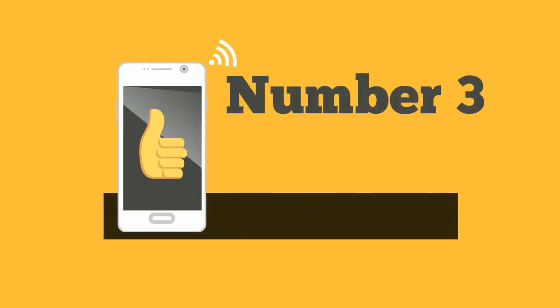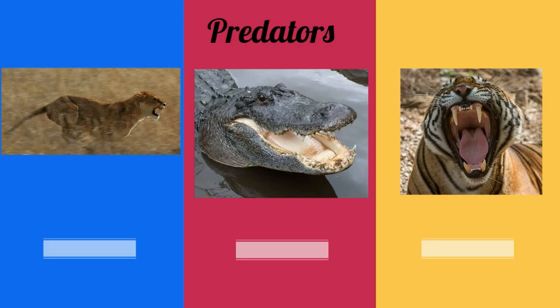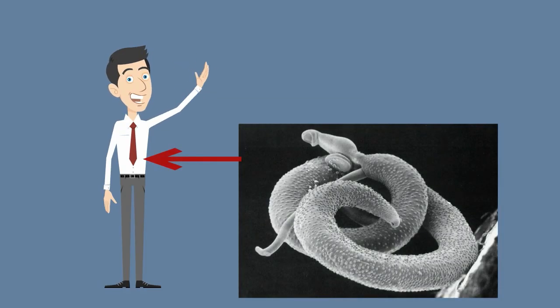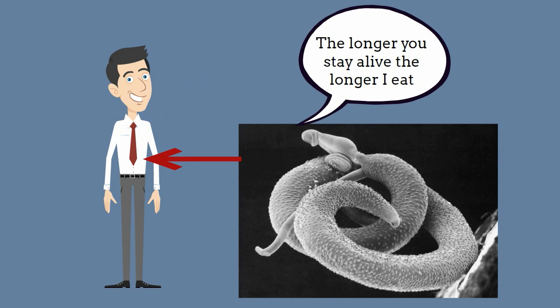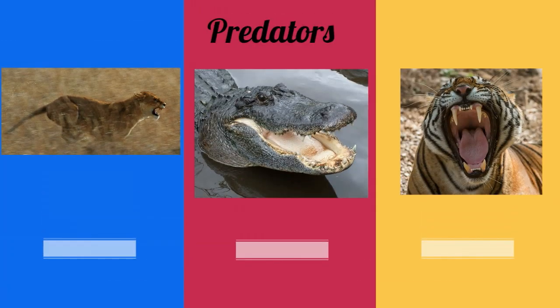Number 3: The predator has a single goal — consume the prey. Most of the time it is advantageous for the host to stay alive for the parasite. As long as the host stays alive, the parasite benefits. Many times the parasite needs the host to stay alive long enough to produce offspring. If the host dies, the parasite either has to relocate or may die also. Rarely is it an advantage for the prey to stay alive for the predator.